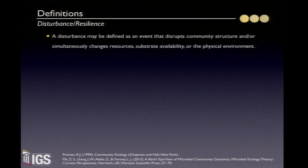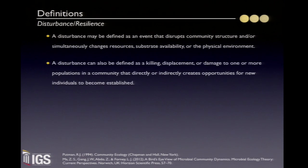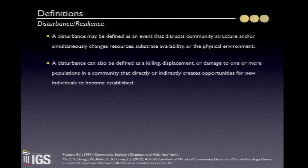Disturbance is another very important concept in ecology, and it's linked to resilience. You can actually kill or displace one or more members of a community, giving opportunity for others to take over the space. But there's another part of disturbance: you can disturb a community by removing nutrients, changing substrate availability, or even changing the physical environment, which will impact community structure. Resilience is the amount of disturbance that an ecosystem can withstand without changing its self-organizing processes and function. Communities with fundamental differences in species composition and structure will differ in their level of resilience.